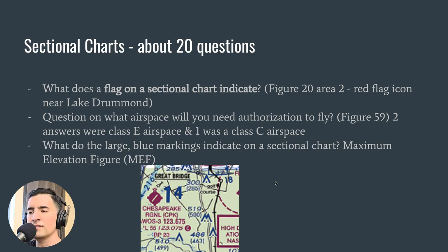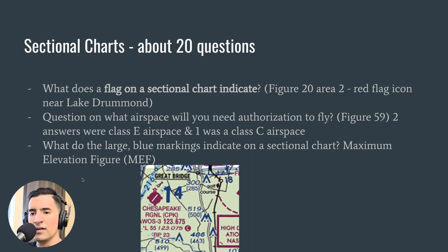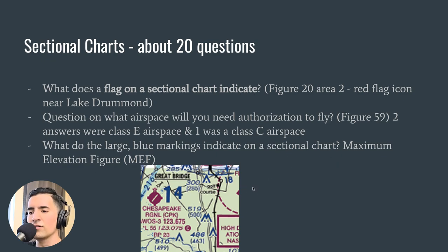What do the large blue numbers indicate on a sectional chart? Those two numbers — for example, 1 and 4 — stand for the maximum elevation figure (MEF). You add two zeros to get 1,400 feet. This means there's something in that quadrant of latitude and longitude that is 1,400 feet tall.